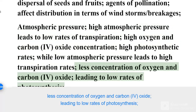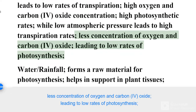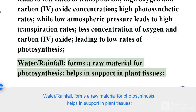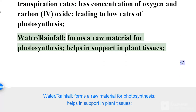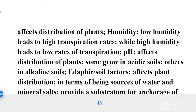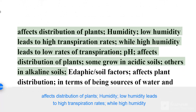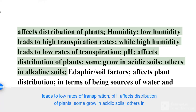Low atmospheric pressure also results in less concentration of oxygen and carbon dioxide, leading to low rates of photosynthesis. Water and rainfall forms a raw material for photosynthesis and helps in supporting plant tissues, and affects the distribution of plants.